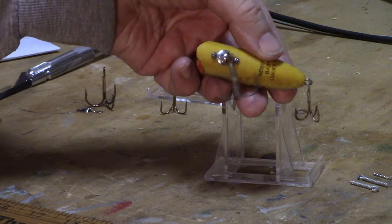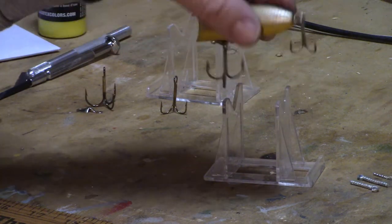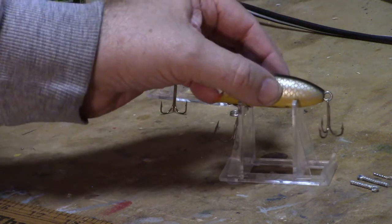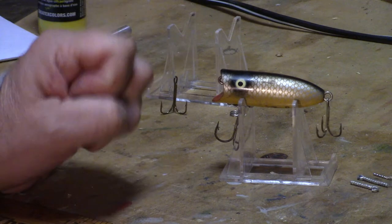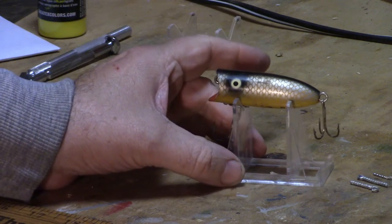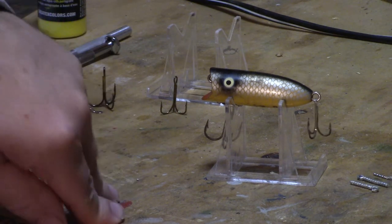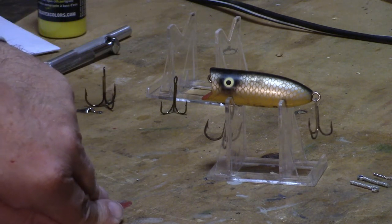This is a Heddon Baby Lucky 13, a very popular topwater lure. This particular one is an antique, so I don't want to throw it anymore and end up losing it. I'm going to attempt to make one. Let's see how it comes out.